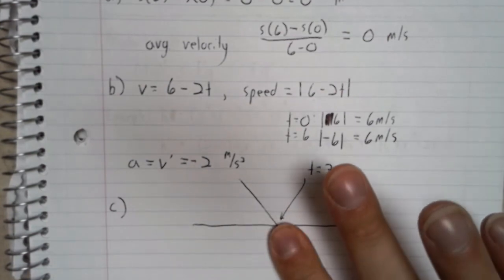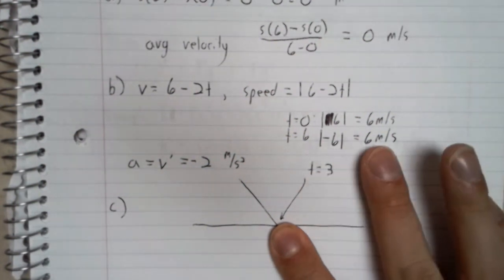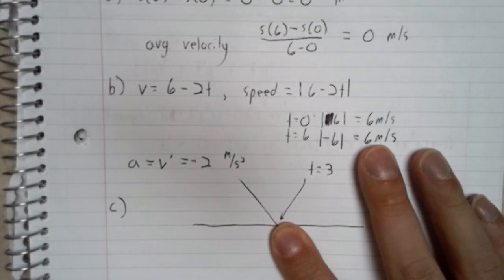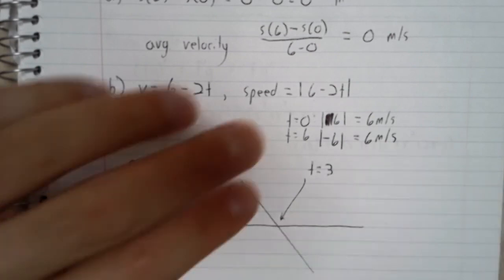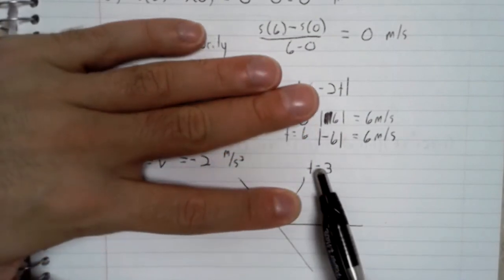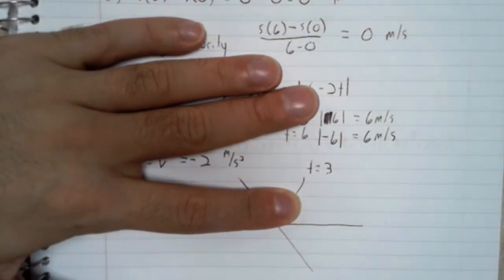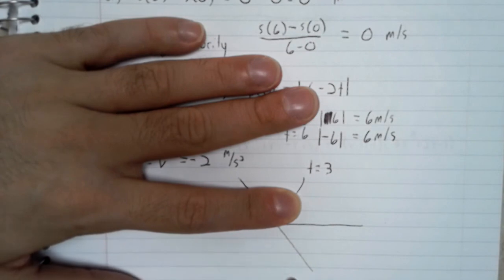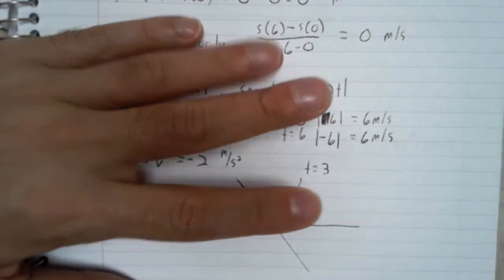To the left of t equals 3, the velocity is positive and the object is going right. To the right of this t of 3, the velocity is now under the axis. It's negative and the object is going to the left.